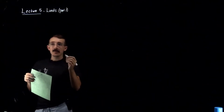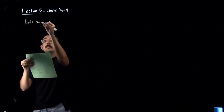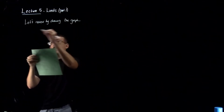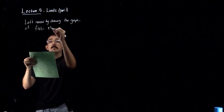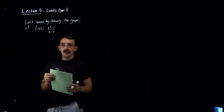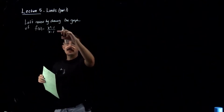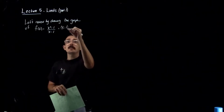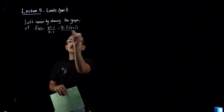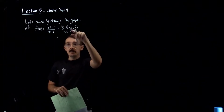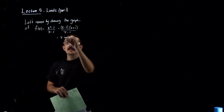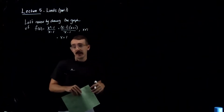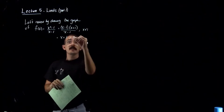Let's review by drawing the graph of the function f(x) = (x² - 1)/(x - 1). This is a rational function because we have two polynomials divided. We can simplify by factoring the numerator to get (x - 1)(x + 1), since this is a difference of squares. The common factor of (x - 1) cancels, leaving x + 1. We just have to remember that x = 1 was never part of our domain, so x cannot equal 1.